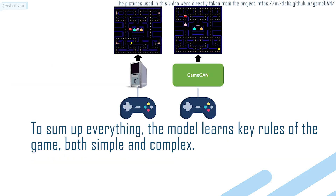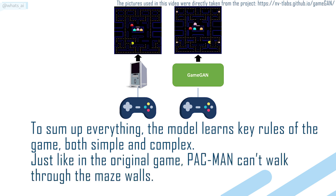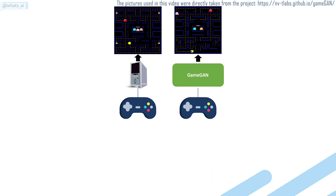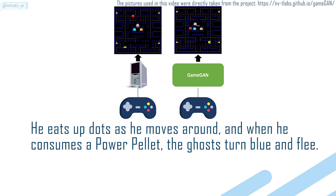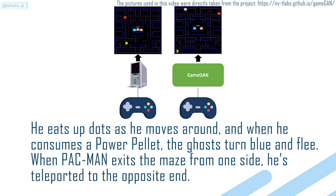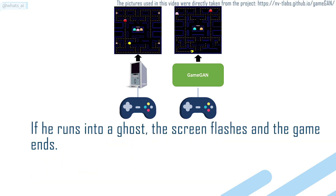To sum up everything, the model learns key rules of the game, both simple and complex. Just like in the original game, Pac-Man can't walk through the maze walls. He eats up dots as he moves around, and when he consumes a power pellet, the ghosts turn blue and flee. When Pac-Man exits the maze from one side, he is teleported to the opposite end. If he runs into a ghost, the screen flashes and the game ends.